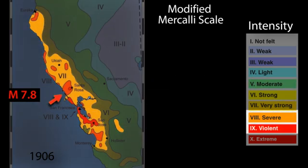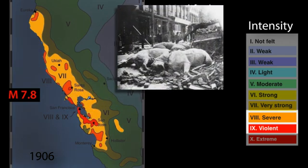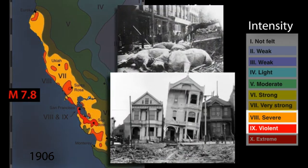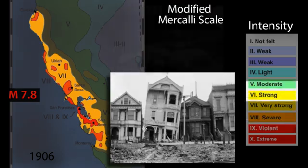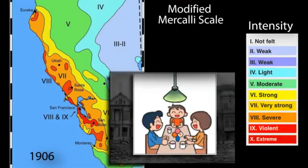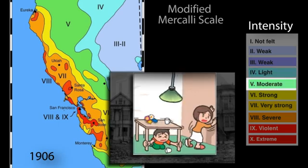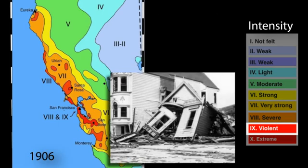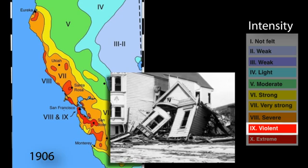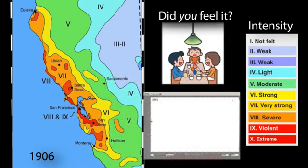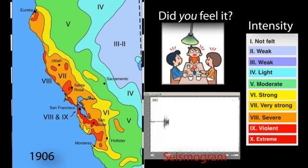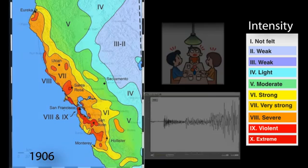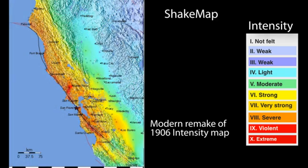In Zones 8 and 9, people, horses, and cattle were thrown off their feet; bridges were wrecked and wood-framed buildings slid off their foundations. The lower numbers generally dealt with how the earthquake was felt by people, while the higher numbers were based on observed structural damage. Human observations still help scientists understand earthquake ground shaking, but intensity is now measured by seismometers and illustrated by USGS shake maps, like this modern reconstruction for the 1906 earthquake.